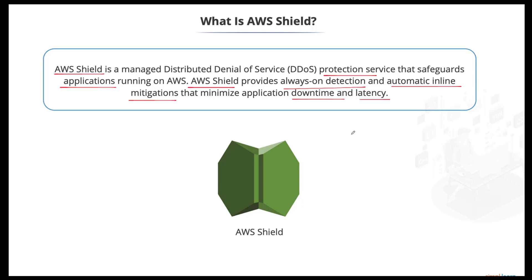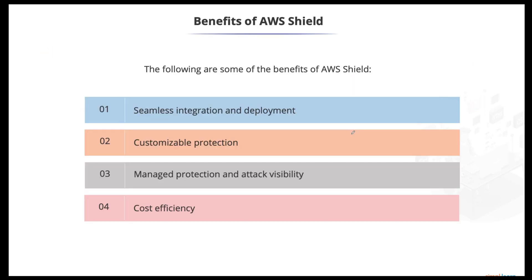For additional protection against denial-of-service attacks, AWS provides Shield Standard and Shield Advanced. Shield Standard is automatically included at no extra cost beyond what we already pay for WAF and other AWS services. Shield Advanced provides expanded DDoS protection for Amazon EC2 instances, load balancers, CloudFront distributions, Route 53 hosted zones, and API Gateways. Shield Advanced does incur additional charges on top of the deployed services.